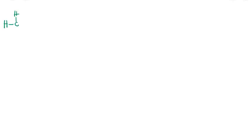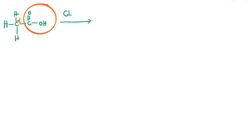Let us understand with an example. Taking acetic acid, written as CH₃-C(=O)-OH, the functional group is the carboxyl group and the adjacent carbon is called the alpha carbon. The condition is that there should be at least one alpha hydrogen. In acetic acid there are three, so all three hydrogen atoms can be substituted. Treating with chlorine in the presence of red phosphorus, one alpha hydrogen is substituted by Cl, and HCl is released.